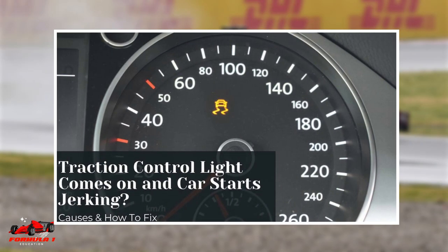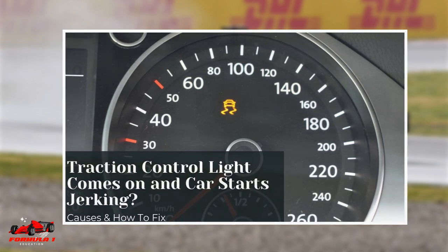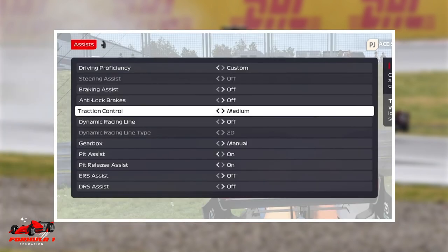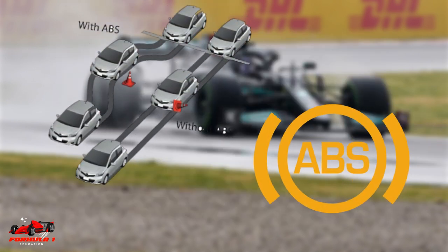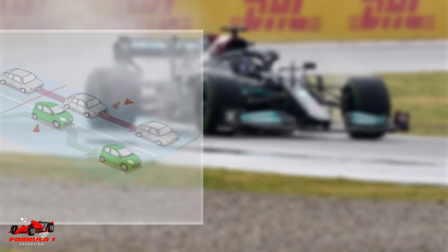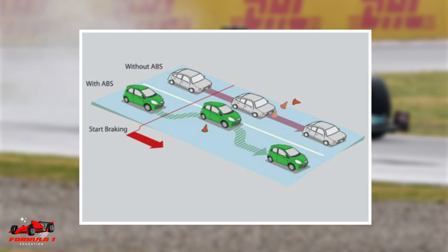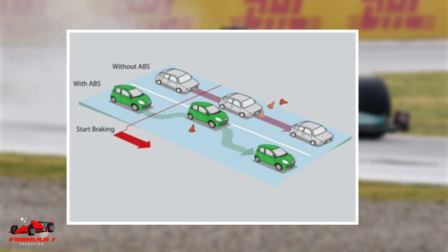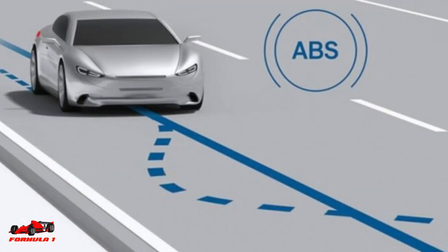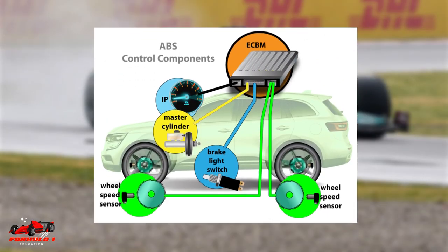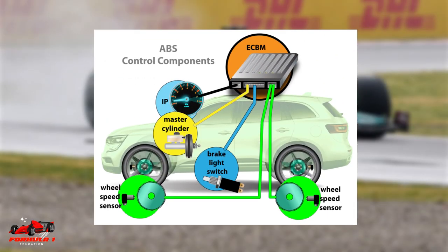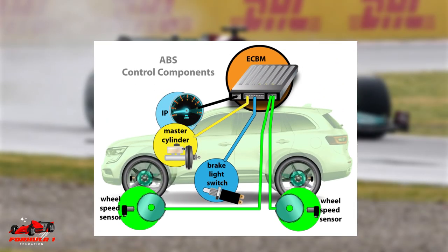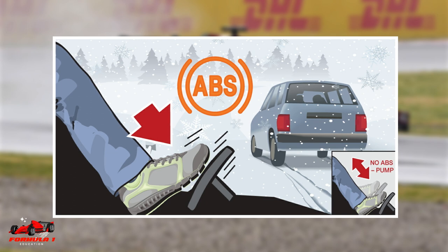When traction control kicks in, the driver might feel a jerk in the car, but this means that the safety feature is working. Road cars are also equipped with anti-lock braking systems, or ABS. Opposite to traction control, this system helps stop your car from skidding when there's too little wheel spin. This software ensures that your wheels continue to spin when you brake, and is really helpful when driving in wet or icy conditions.